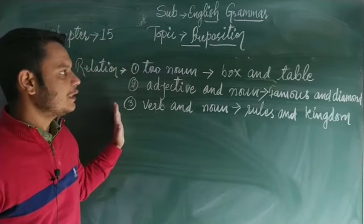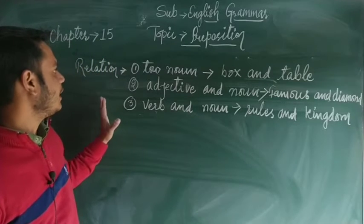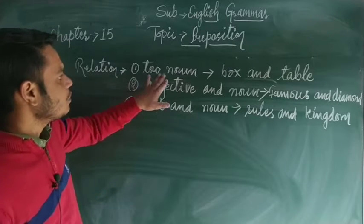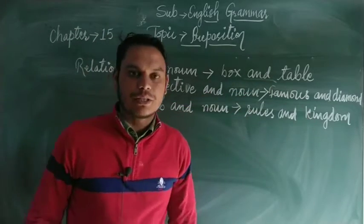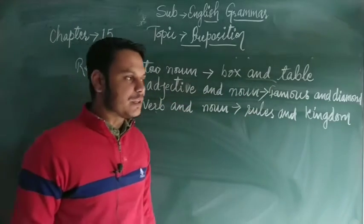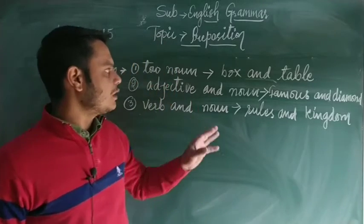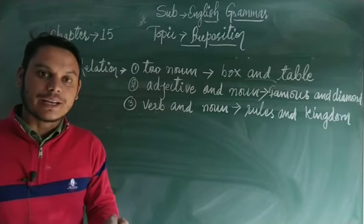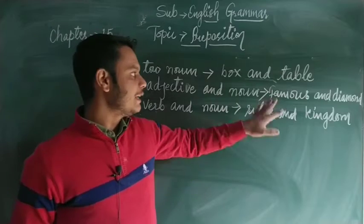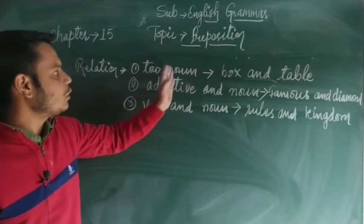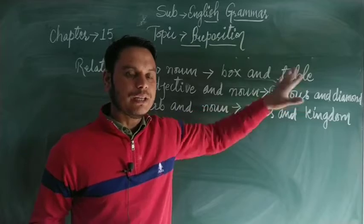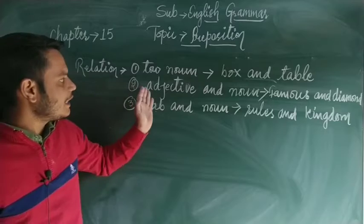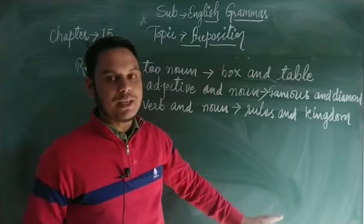Let's take a look at what relations prepositions generate. For two nouns — for example, box and table — the sentence would be: 'Put the box on the table.' Here 'on' is the preposition. Box is a noun, table is a noun, and 'on' generates the relation between them.